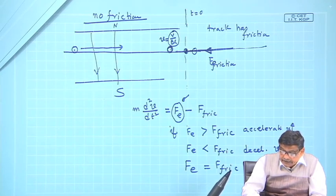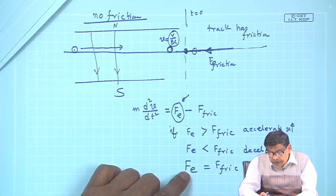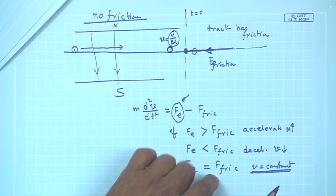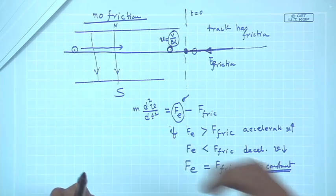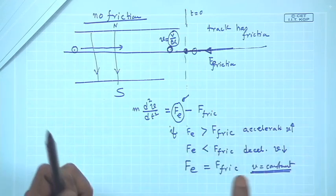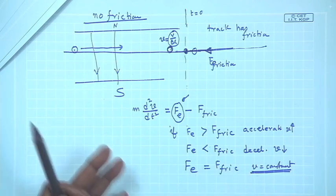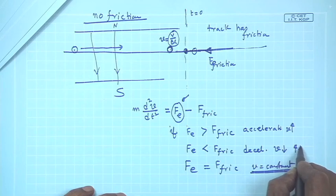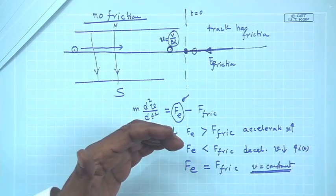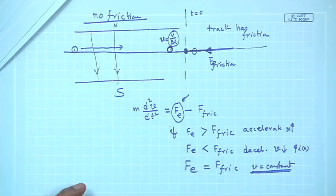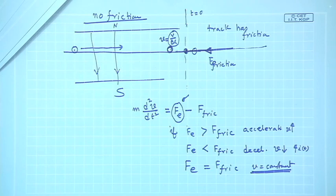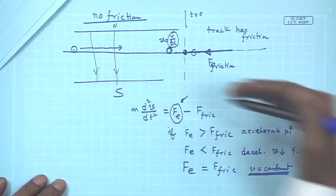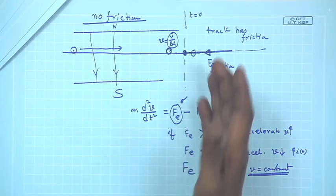It will pick up such a speed that enough current flows so that BIL equals f-friction. The machine will slow down, invite more current, Fe develops, and this continues until Fe becomes equal to f-friction with increasing current. A new velocity — less than V/BL — is where the system will now run. Therefore, any opposing force, which is called loading, means it is working as a motor and dissipating some power.